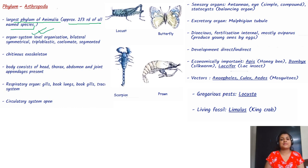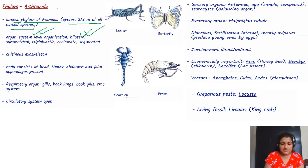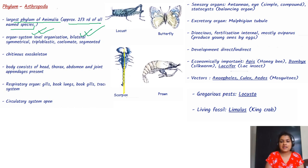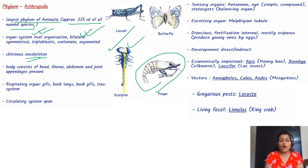Arthropoda has organ system level of organization and bilaterally symmetrical bodies. They have a chitinous exoskeleton. The body consists of head, thorax, abdomen, and jointed appendages. Respiratory organs include gills, book lungs, book gills, and a tracheal system.